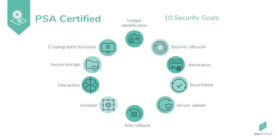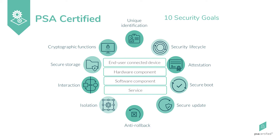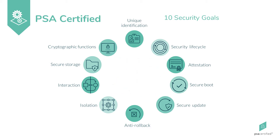The goals can be applied as required — for example, to an end-user connected device, a hardware component, a software component, or a service. We use the term device to represent any entity at any level that must be secure and trustworthy. The 10 security goals guide security design by covering the security foundations, allowing products and features to be developed on top, while also providing a set of requirements the ecosystem can trust. Once implemented, products may go through a security evaluation such as PSA Certified to measure the robustness of the implementation.